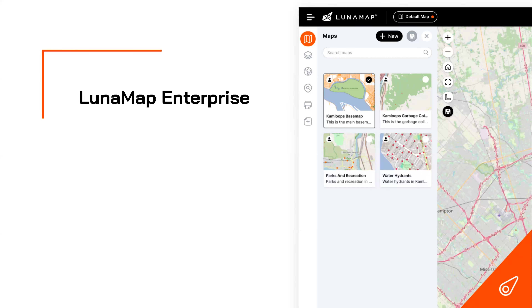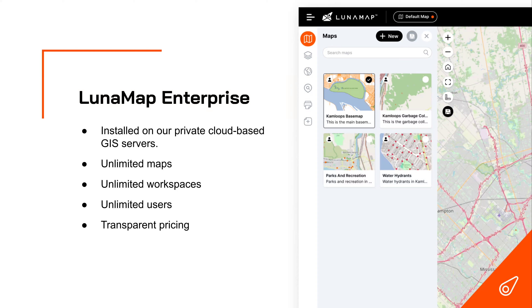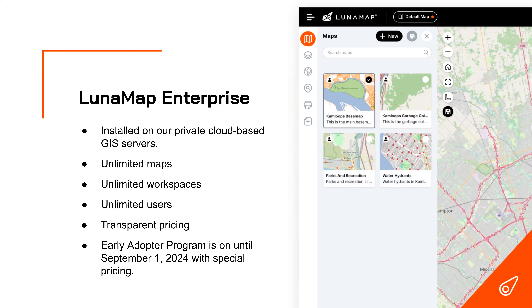We also have LunaMap Enterprise, a web-based GIS platform installed on our cloud-based servers. It gives you access to everything within your PostgreSQL database and GeoServer — accessible on the web to build custom maps. We're anti-SaaS in a way: unlimited maps, workspaces, and users on your own private cloud. We're transparent with our pricing and currently running an early adopter program until September 1st, 2024. Email me for pricing details and a demo.